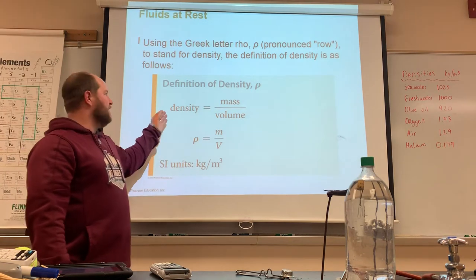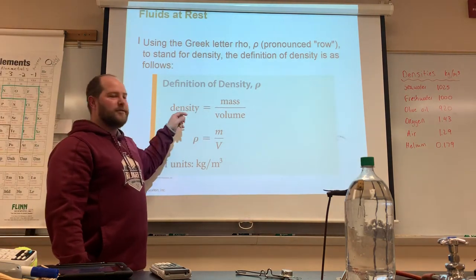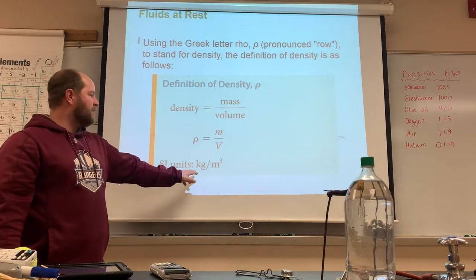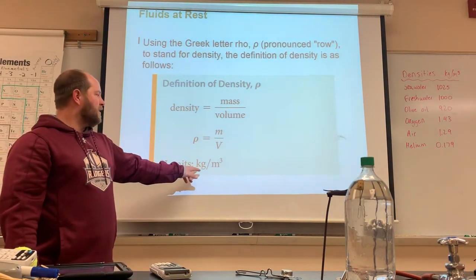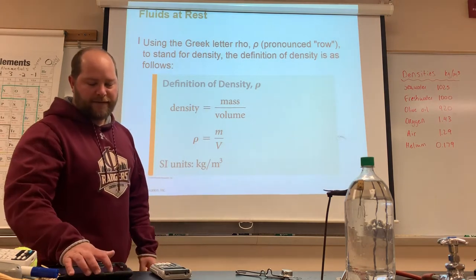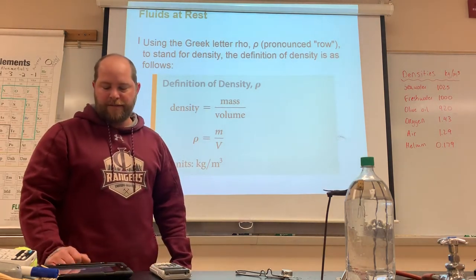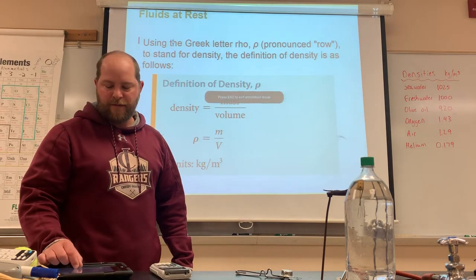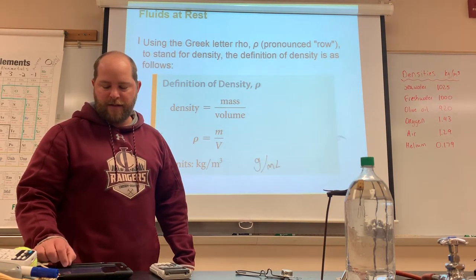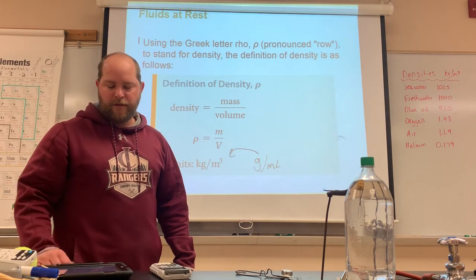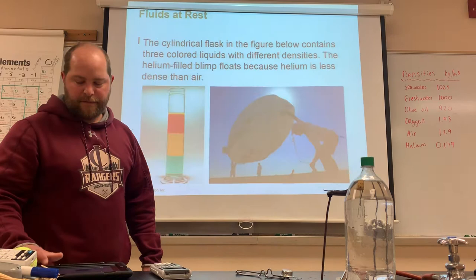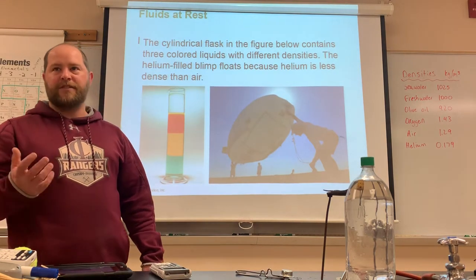Density is mass divided by volume — think of it as DMV. The SI units for density are kilograms per meters cubed. We've also seen grams per milliliter, but for physics class we're going to use kilograms per meters cubed.